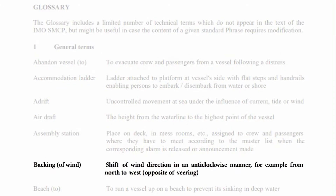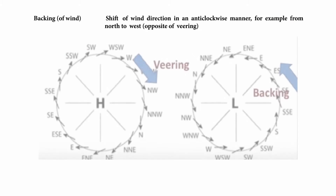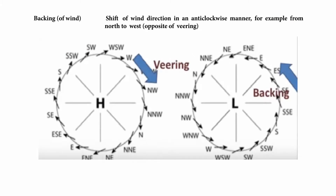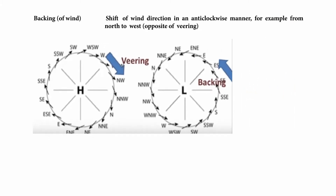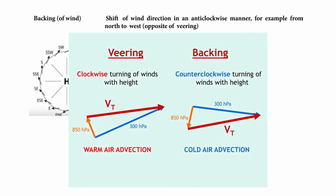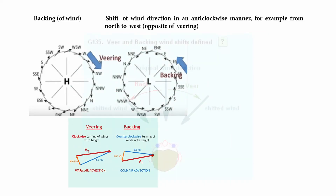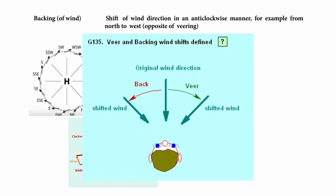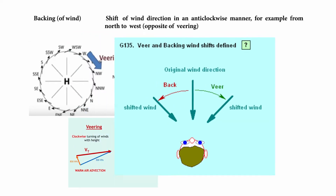Backing of wind. Backing is a shift of wind direction in an anticlockwise manner — for example, from north to west. It is the opposite of veering.